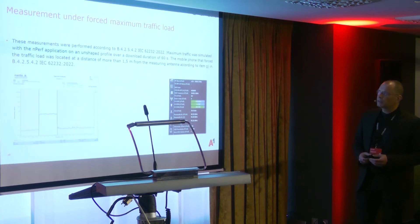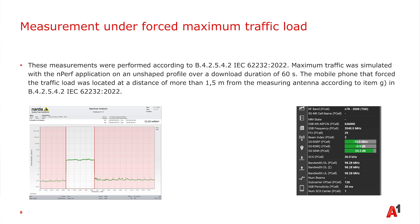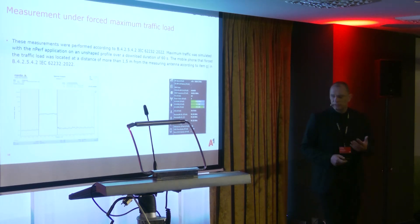The second method is measurement under forced maximum traffic load — also included in the standard. You have mobile phone user equipment and you force the beam to the measurement point with a download. You measure frequency-selectively over the whole bandwidth, integrate over it, and measure the value at the measurement point. We also checked that we were at the right base station and the right beam we assumed.